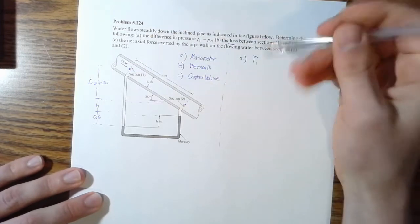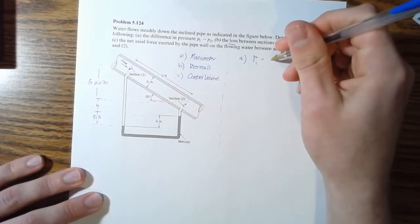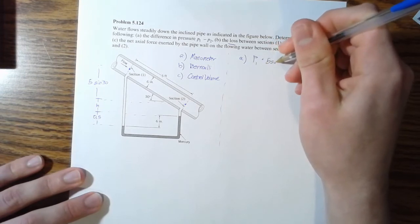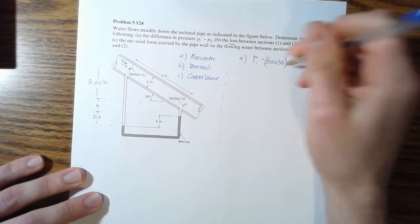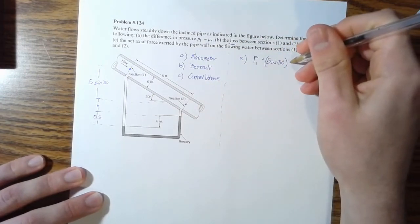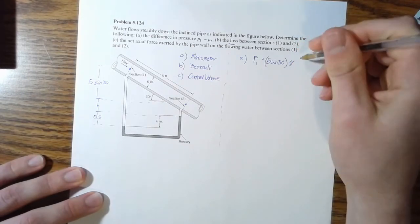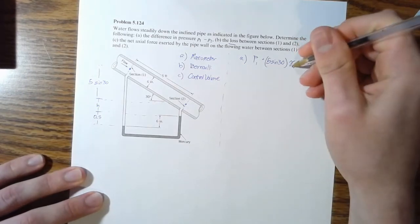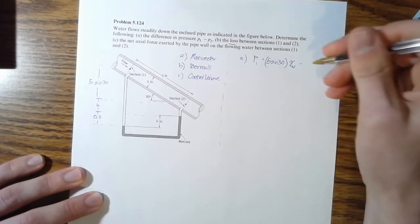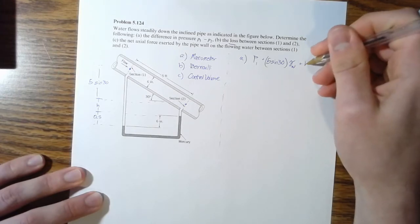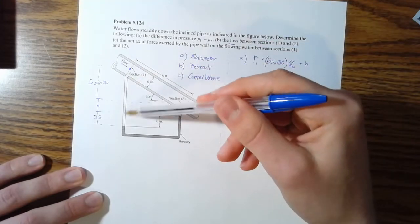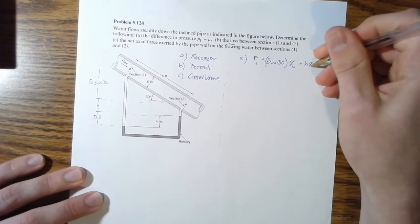All right. And then we're going to go down in pressure. So add, we add our distance. So five times sine of 30 multiplied by whatever fluid we're moving through their specific gravity or specific weight. So that's a gamma W for water. And then we're going to go down again, H in water. So gamma W.